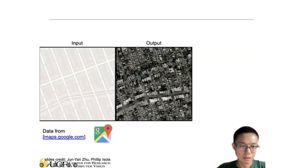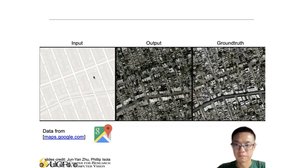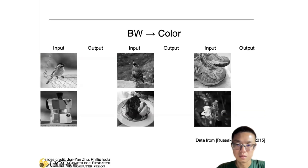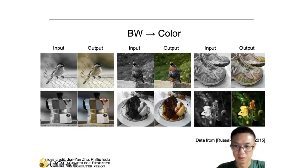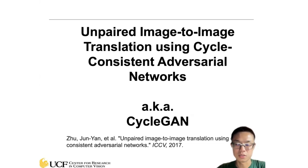Here is another example where the input map is used to generate the corresponding satellite image, and we can do the reverse — based on the satellite image, generate the map. Another application they demonstrate is from grayscale to color space. So that's the conditional GAN. The next work we're going to talk about is unpaired image-to-image translation using cycle-consistent adversarial networks, often referred to as cycle GAN.